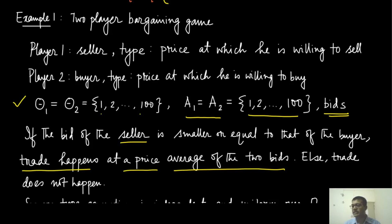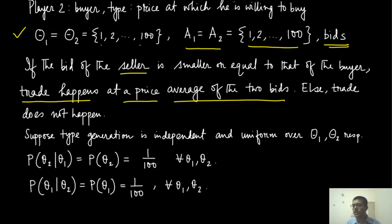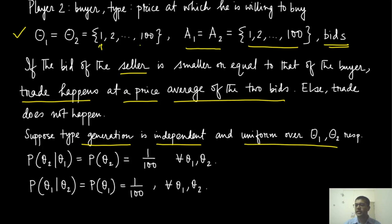In the other case, when the seller's asking price is larger than the buyer's maximum willingness price, the trade will not happen. Assuming that type generation is independent — all theta_i's are independently generated and uniform over theta_1 and theta_2, so every number is equally likely — you can write the conditional probability, which reduces to just the unconditional probability, which is 1/100 for all theta_1 and theta_2. The same thing is true for player 1 as well.